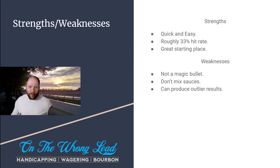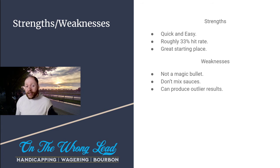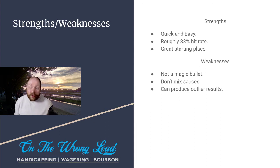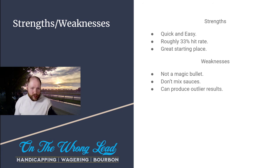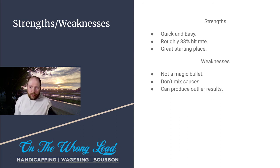One way to find value is to look for the horse with the fastest last-out speed figure that isn't the 'sexy' horse in the field. If you see a field with big-name trainers like Bob Baffert, Todd Pletcher, or Chad Brown, but the fastest last-out figure belongs to lesser-known connections, the board will often go toward the big names. You can get what should be the best horse in the race at a discount. That's one of the major strengths — speed figures are a great starting place for really handicapping a race.